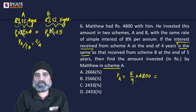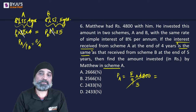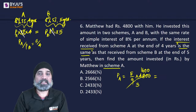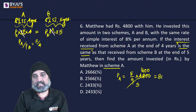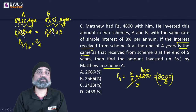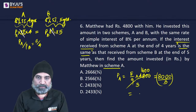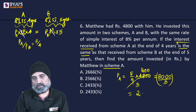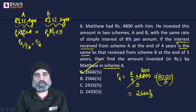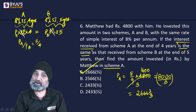PA = (5/9) × 4800 = 1600 × 5/3 = 8000/3 ≈ 2666.67. So the amount invested in scheme A is rupees 2666 and 2/3, which is option A.